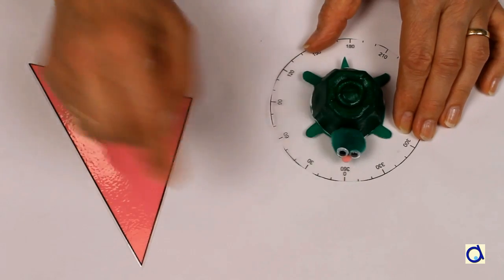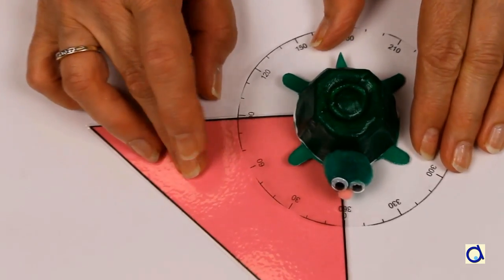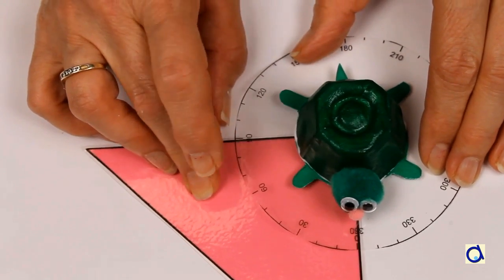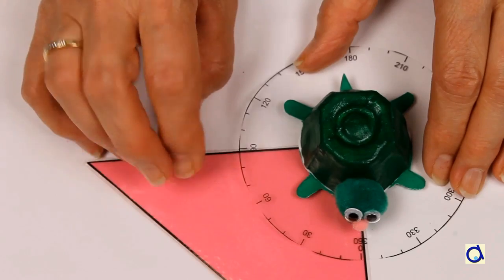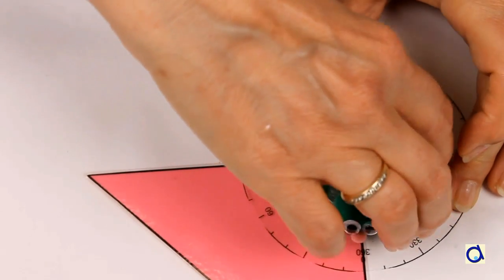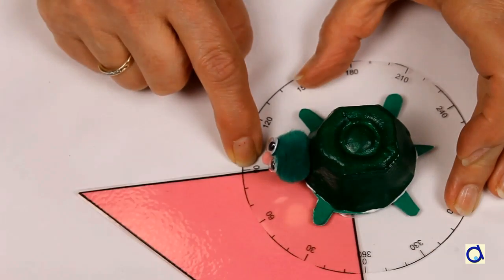To measure an angle, point the nose of the turtle toward the zero on the protractor and place the center of the turtle at the vertex of the angle. While keeping the protractor in place, turn the turtle to measure the angle. You can see that in this case, the angle is 90 degrees.